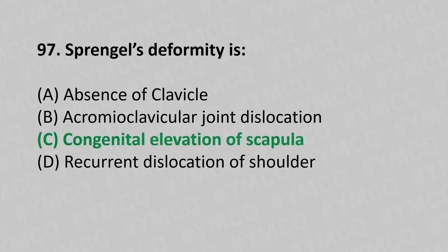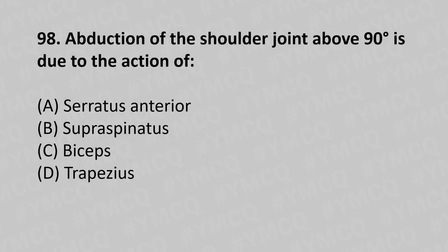Moving to our 98th question. Abduction of the shoulder joint above 90 degrees is due to the action of: option A serratus anterior, option B supraspinatus, option C biceps, option D trapezius. The answer is option A, serratus anterior.